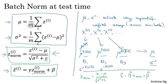So the takeaway from this is that during training time, mu and sigma squared are computed on an entire mini-batch of, say, 64, 128 or some number of examples. But at test time, you might need to process a single example at a time.